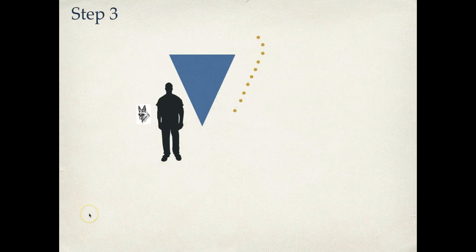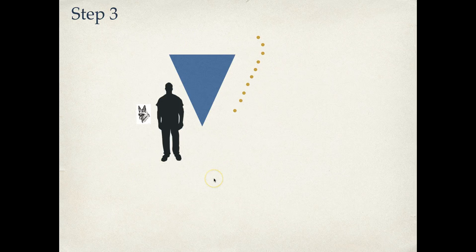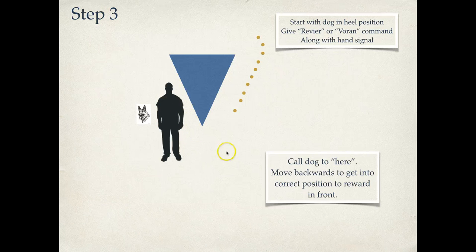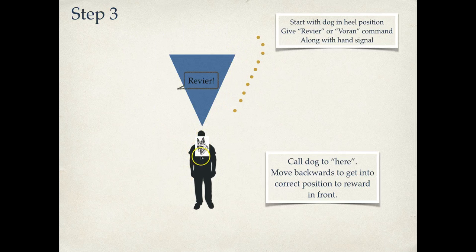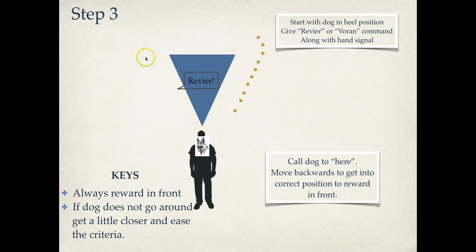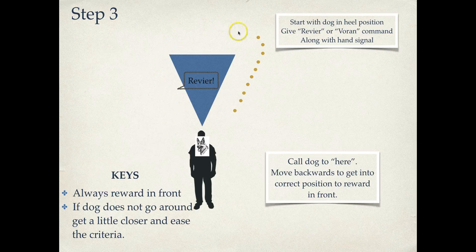Step three. This is a big step for the dog, because this is really the first time the dog's going away from you. Before, it's been always the dog coming to you. Start the dog in heel position. This will be the first time we give the Revere, Voran, and also our hand signal when sending the dog as well. In this one, you'll be on this side of the blind, so we're going to have to move in order to get an ideal position to reward. Because if we stay here, we're going to reward behind, which we never want to do. So, Revere, the dog goes, we move, boom, we get in good position to reward the dog. Always reward in front. If the dog does not go around, maybe ease our criteria a little bit. Get a little closer and encourage the dog. Do whatever it takes to get the dog to go away from you, go around and come back.